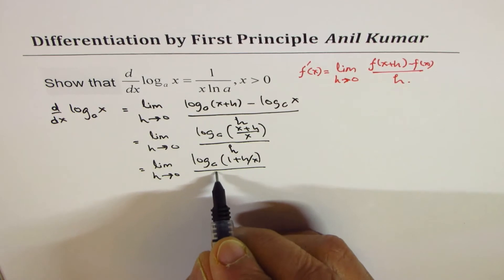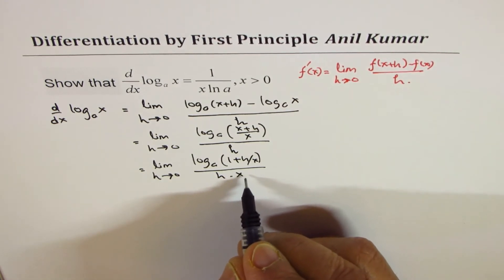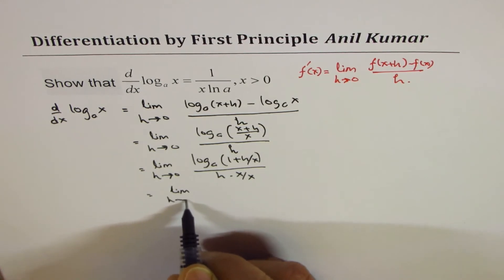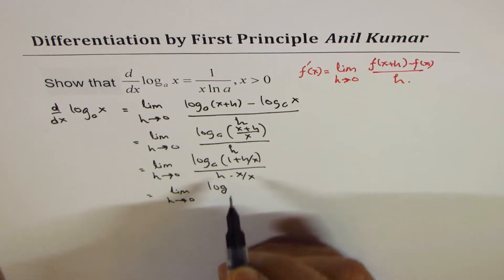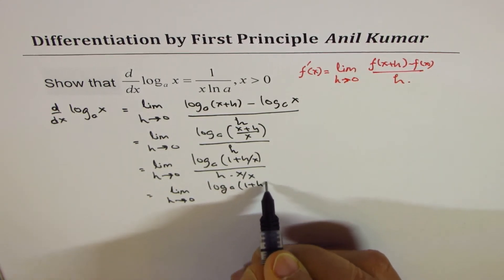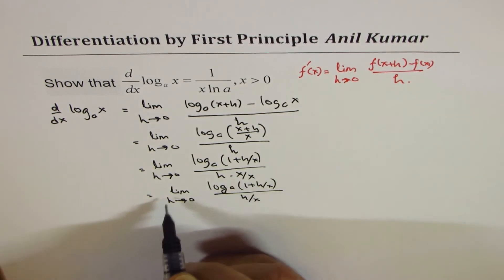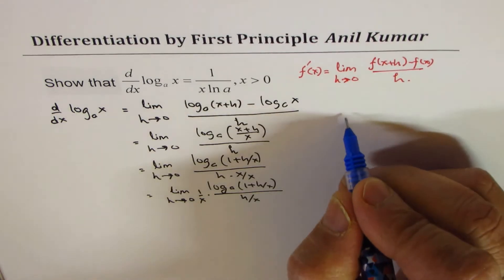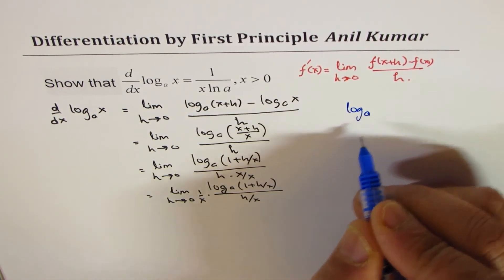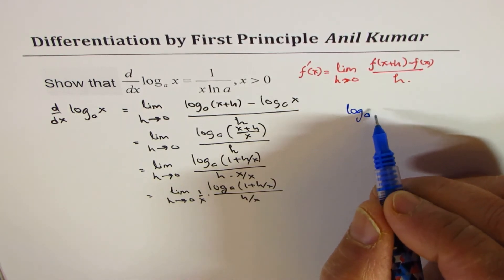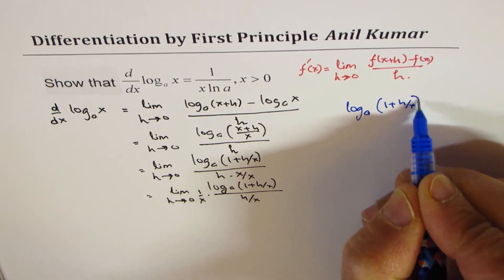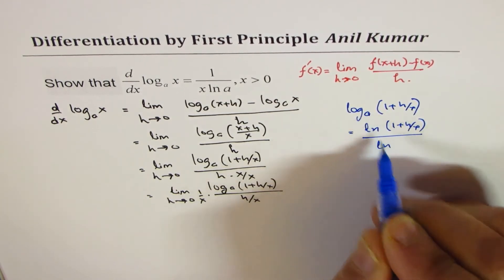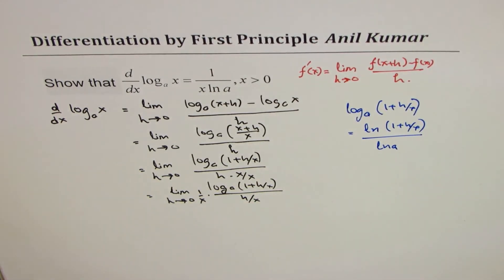We multiply by x over x, giving us the limit as h approaches 0 of log base a of (1 + h/x) over (h/x). We can bring 1 over x outside the limit. Now applying the change of base formula, log base a of (1 + h/x) can be written as ln(1 + h/x) over ln(a).